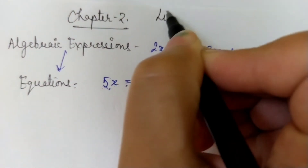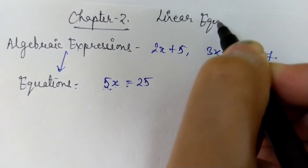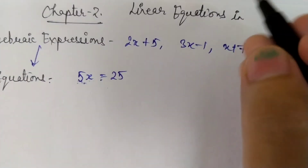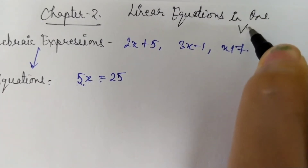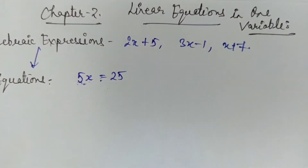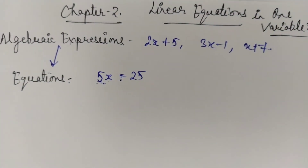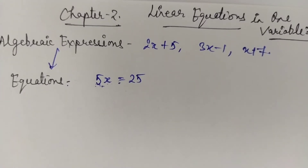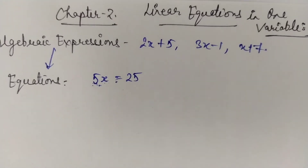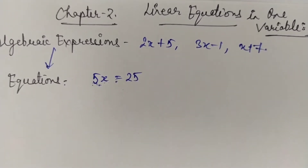What you are going to learn further is linear equations — linear equations in one variable specifically. This is Chapter 2: Linear Equations in One Variable. Equations can be linear, can be quadratic, can be cubic — you will learn quadratic and cubic in higher standards. The basic starting point is linear equations, and here you are dealing with one variable only.